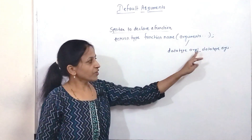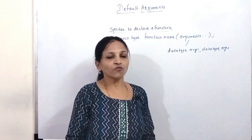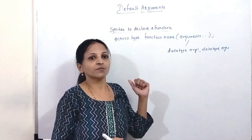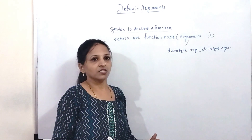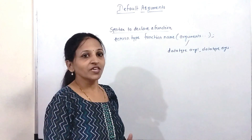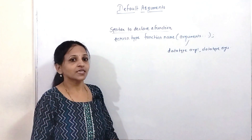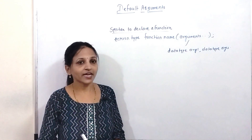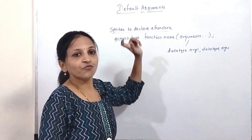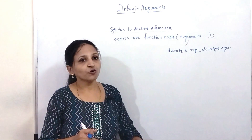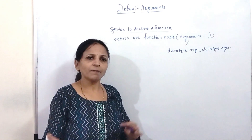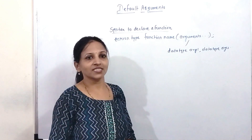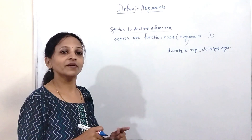Every time we must mention the data type and then the argument name. Normally, whenever we call a function, it is compulsory to pass exactly that many arguments — it is a compulsion. But in C++, we can pass fewer arguments than mentioned in the function declaration or definition. That is possible through the default argument concept, where we set a default value for some arguments. If we are not passing that argument while calling the function, then its default value will be considered. This is the concept of default arguments.